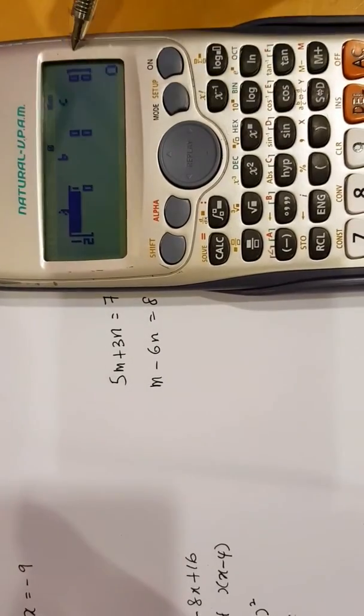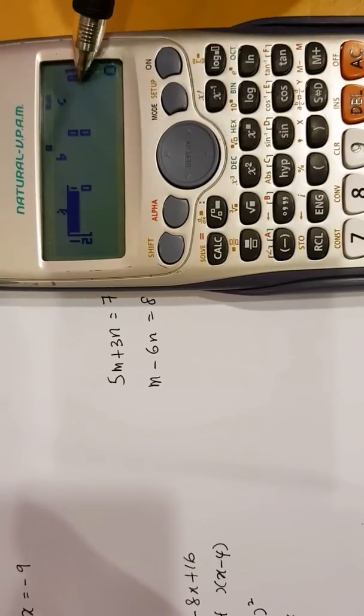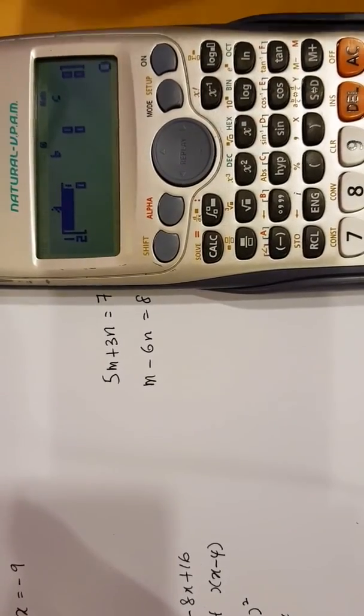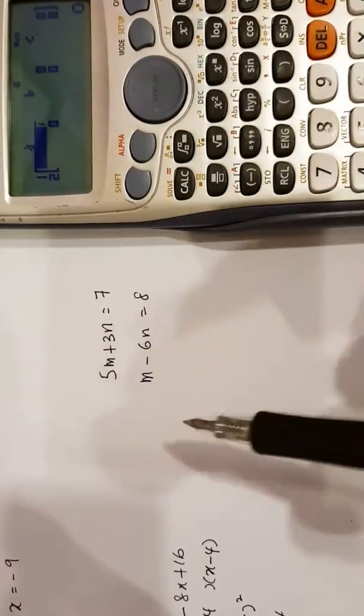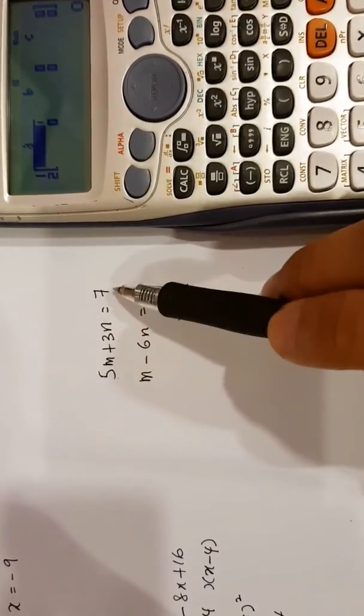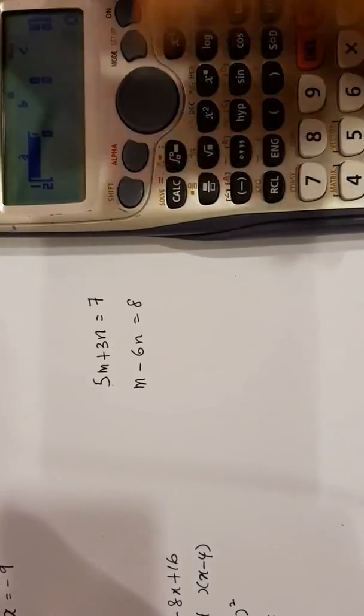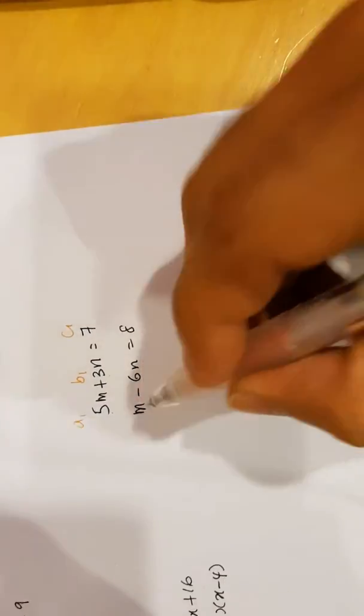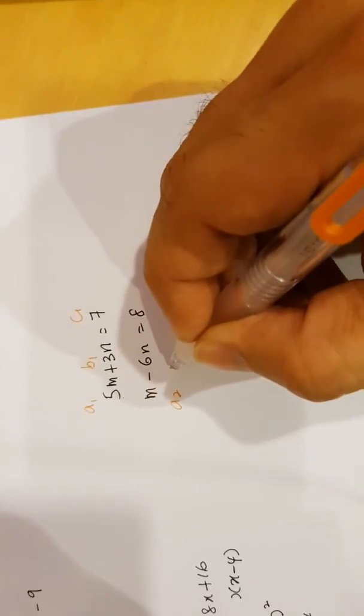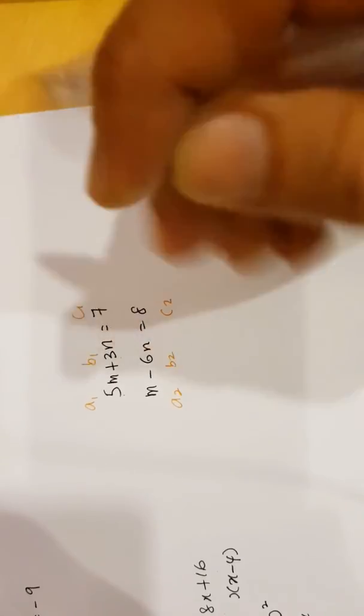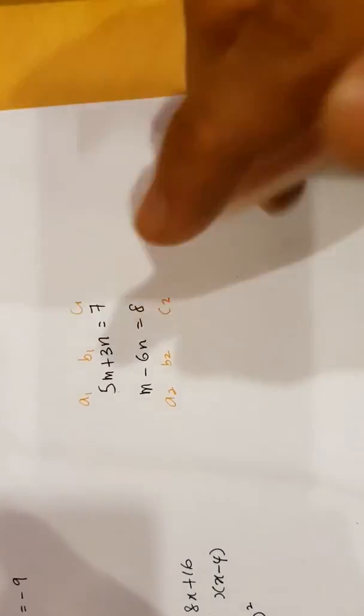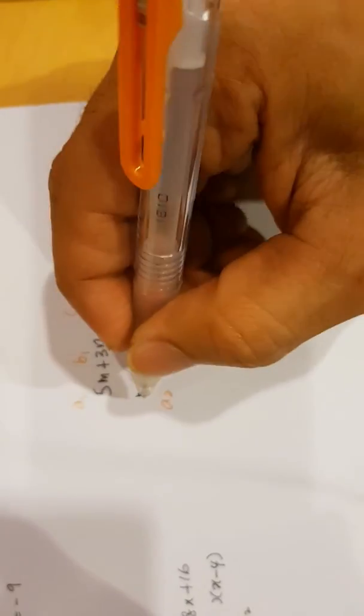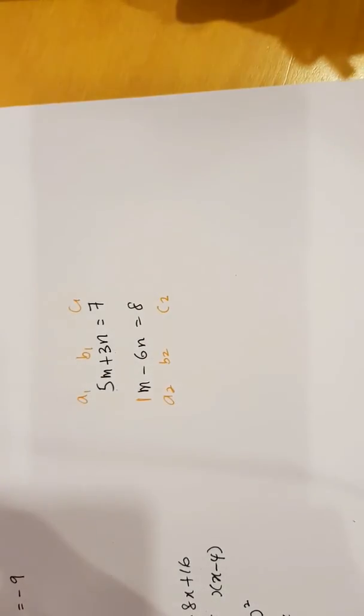You see there are two rows here. The first row is for the first equation. The second row is for the second equation. In this case here, we've got 5, 3, and 7. How it works is this way. For the first equation, that'll be A1, B1, C1. For the second row, this will be A2, B2, and C2. Just remember that this M has got no number, which means, by default, that number is 1.